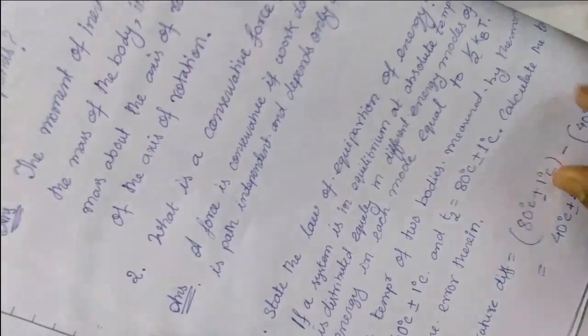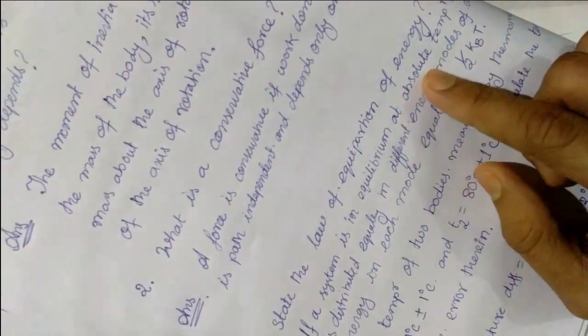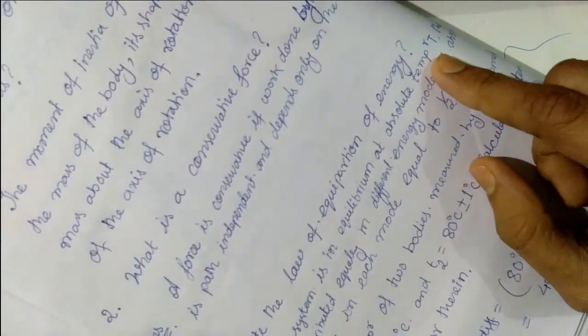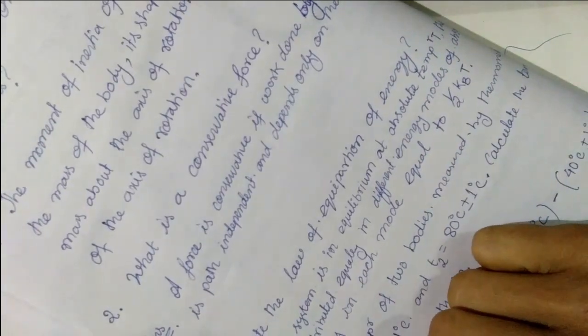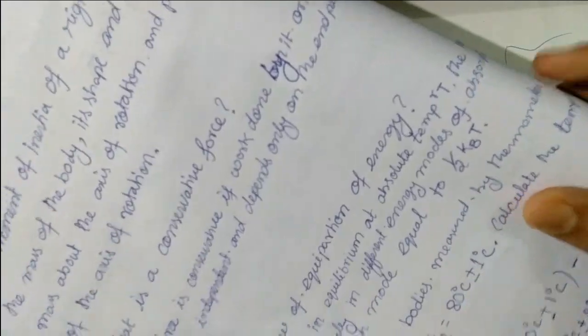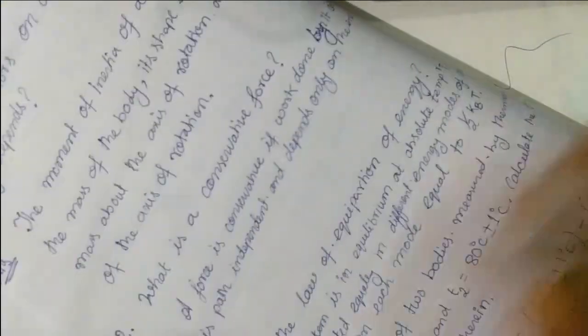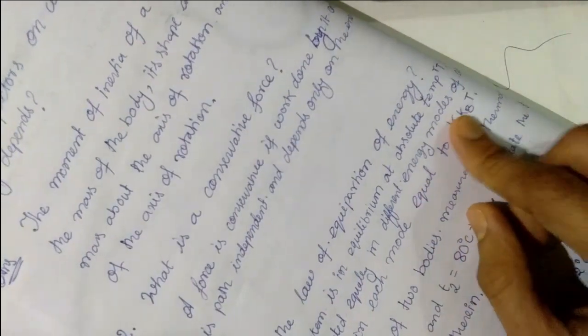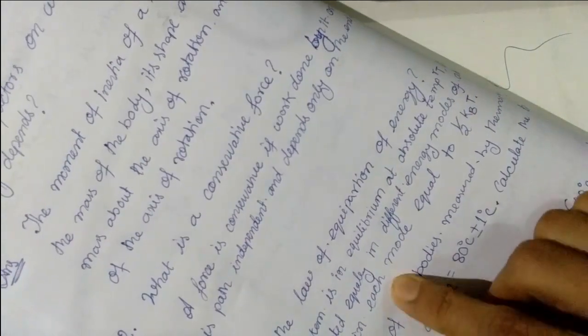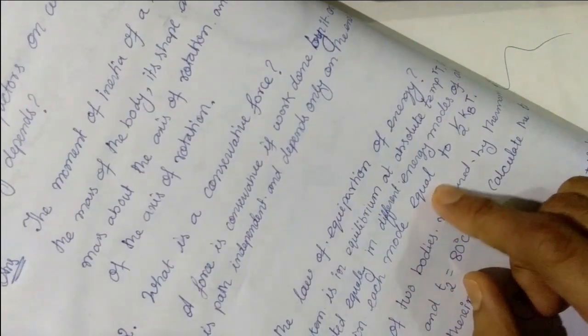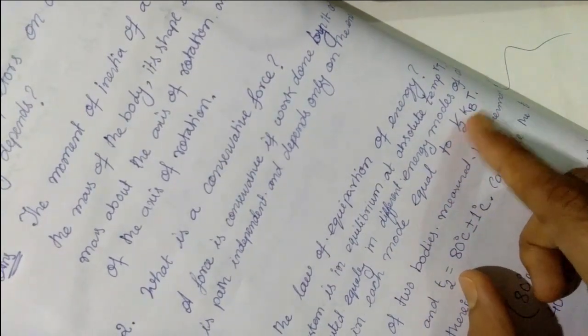Next question: State the law of equipartition of energy. If a system is in equilibrium at absolute temperature T, the total energy is distributed equally in different energy modes. The energy in each mode is equal to half KT.